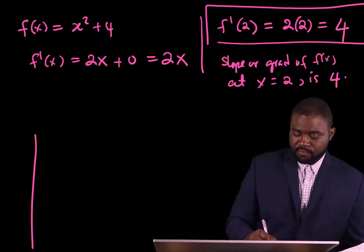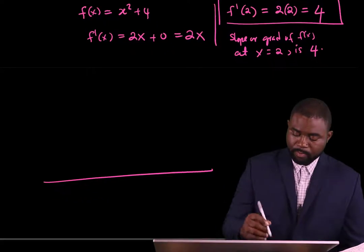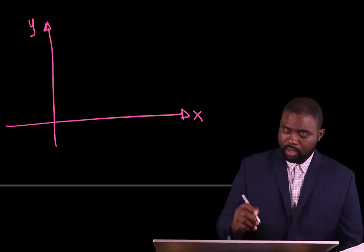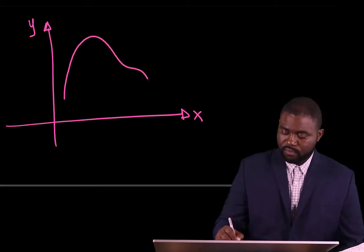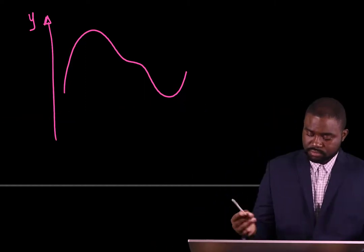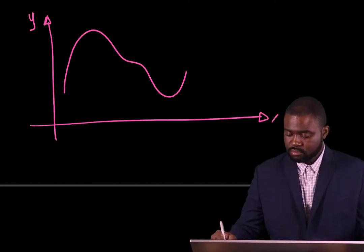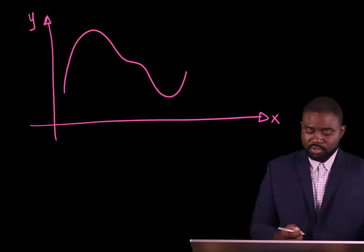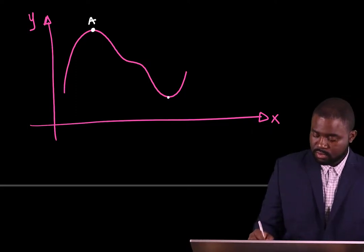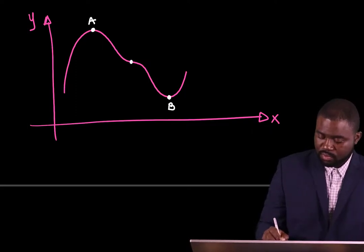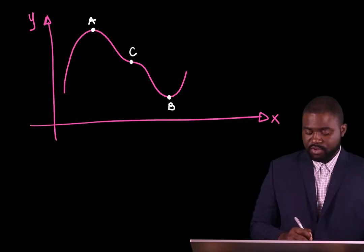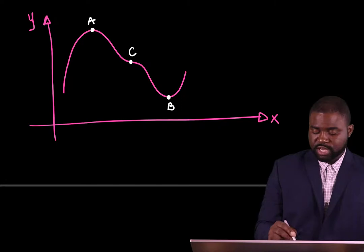If we look at a function like this — let's say we have a function like this. It's an interesting function. Just by observation, you will notice a couple of interesting things. You have point A, you have point B, and you have point C.